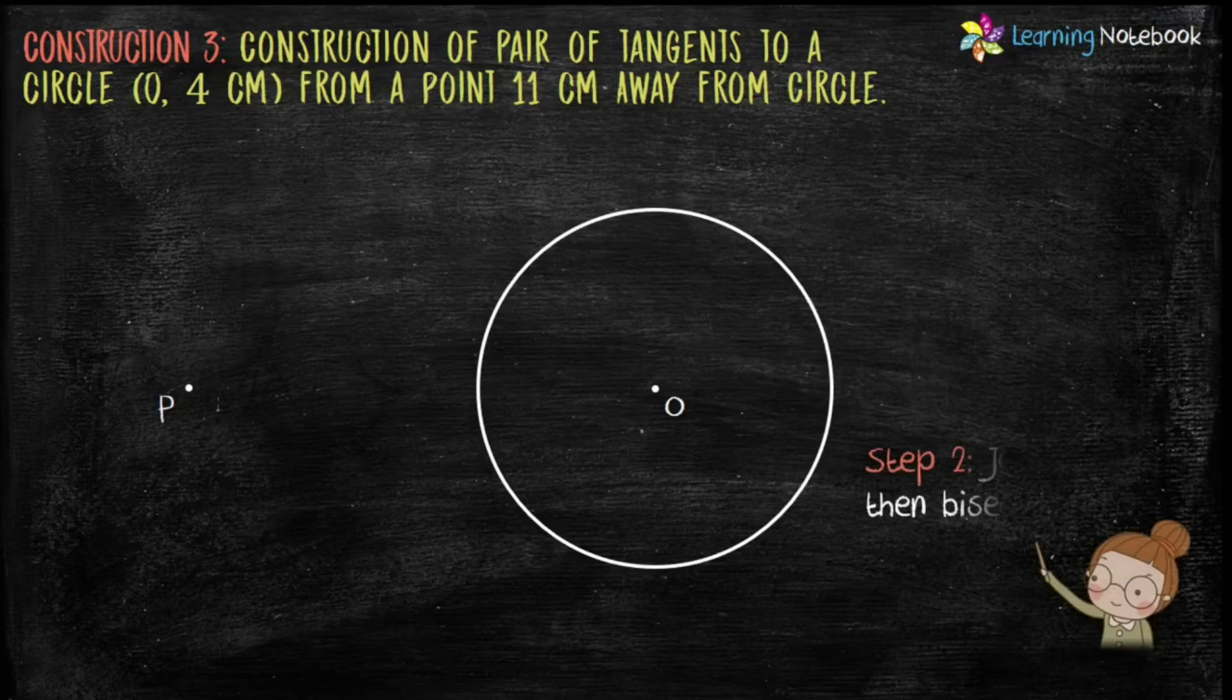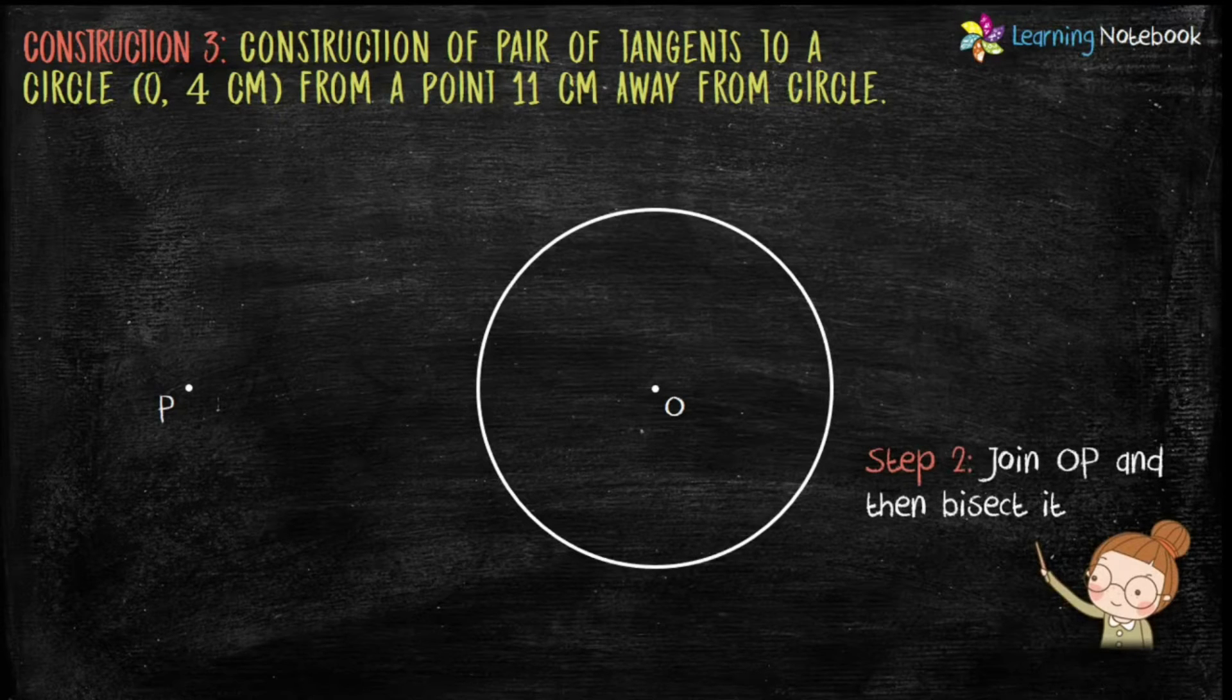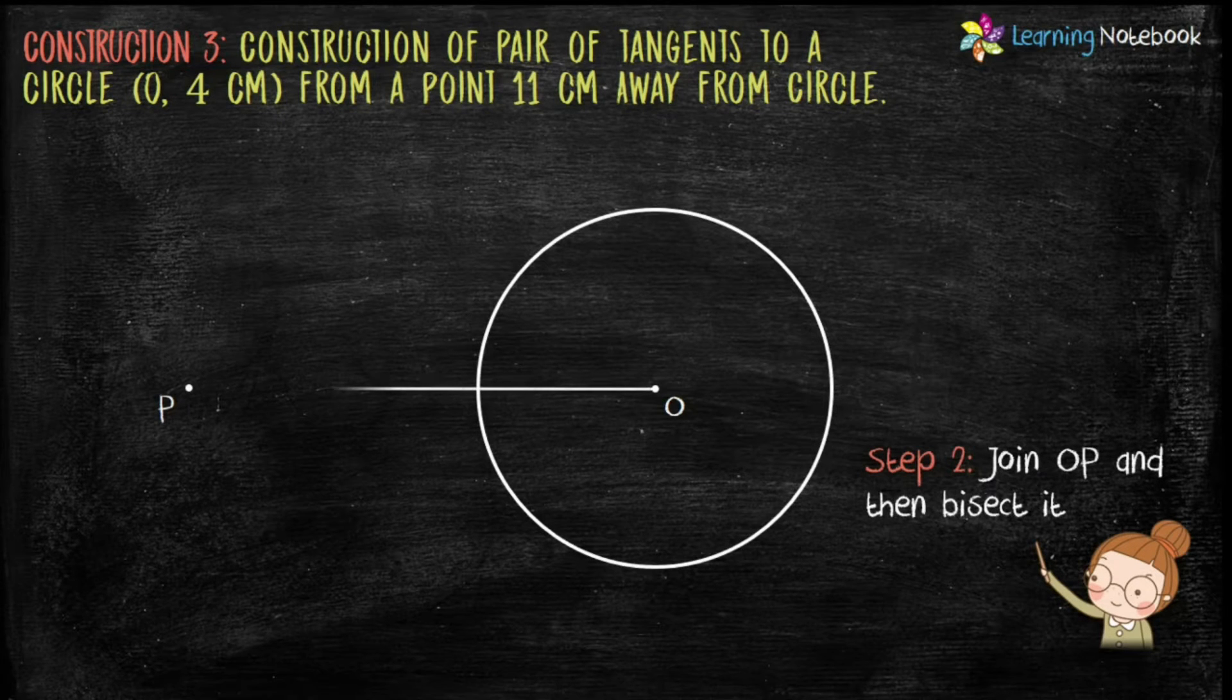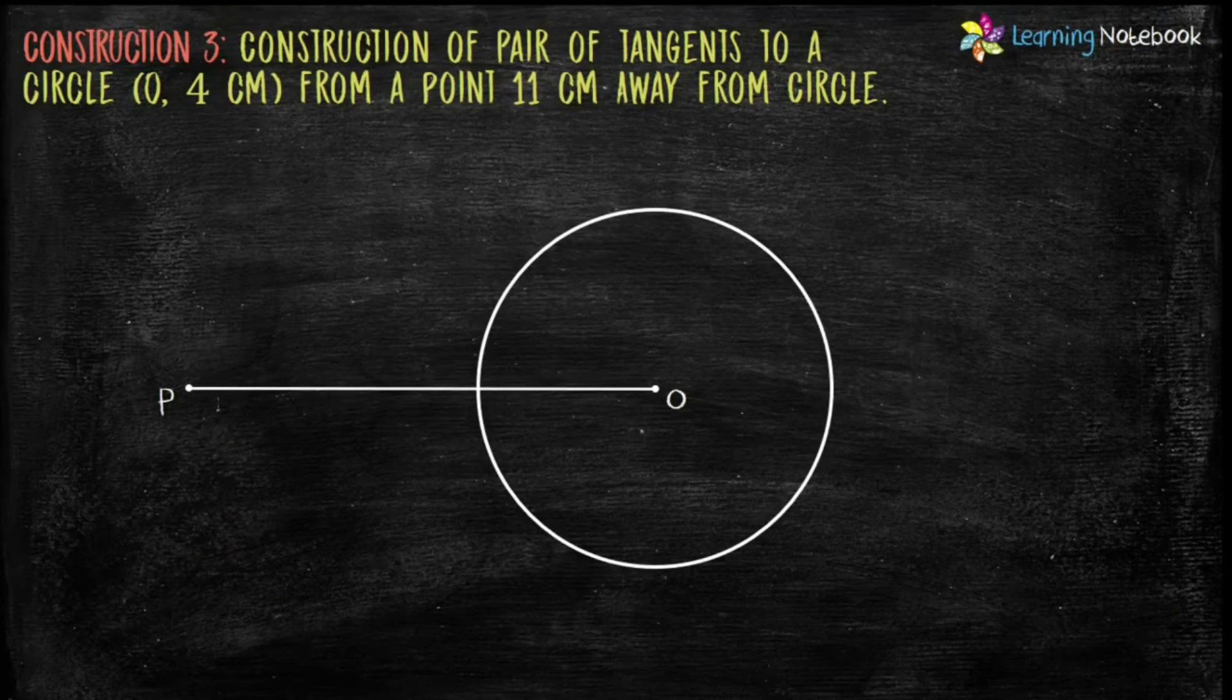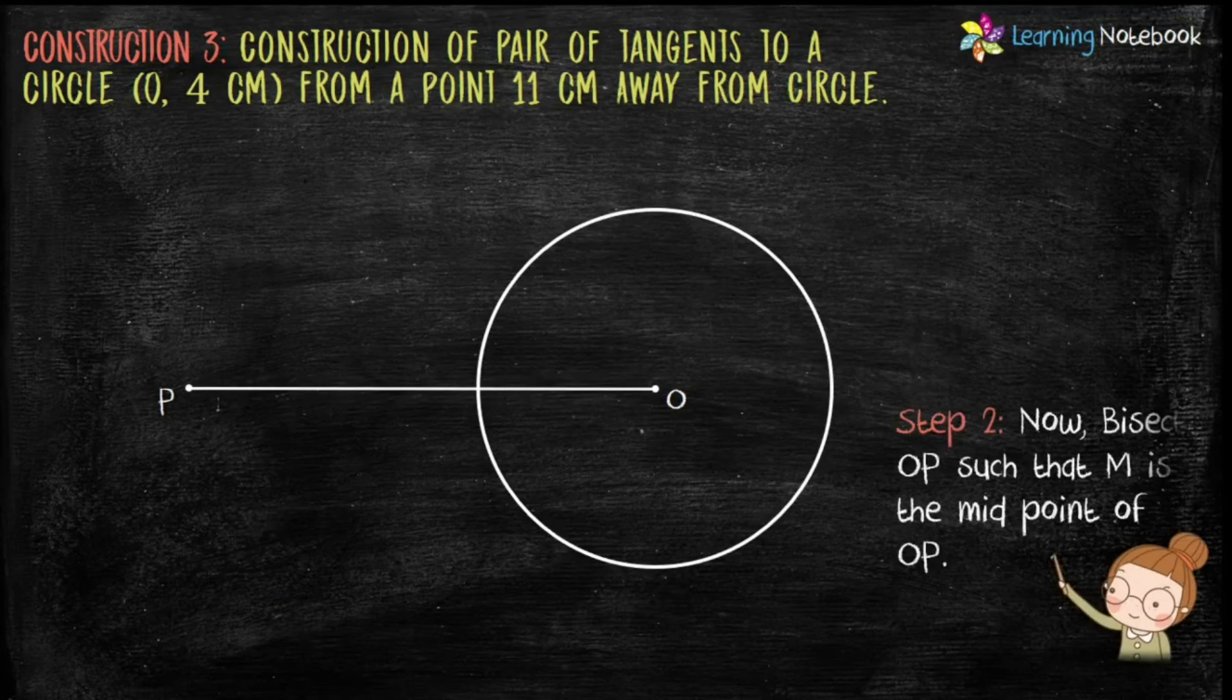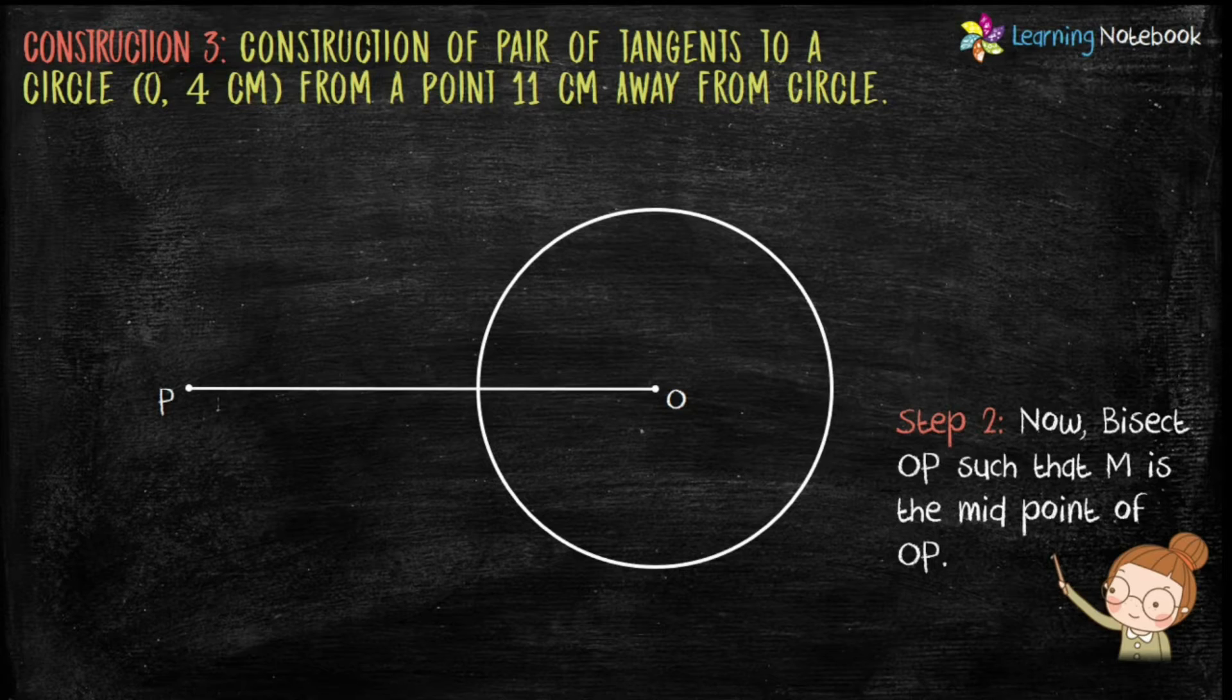Step 2 is join OP and then bisect it. So let's first join OP. Now bisect OP. Students, you have learnt how to bisect a line segment in class 9. For this, open the compass with a length more than half of OP.